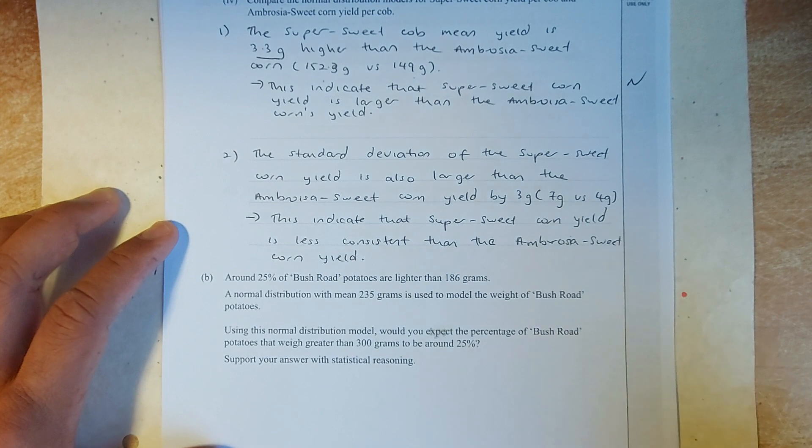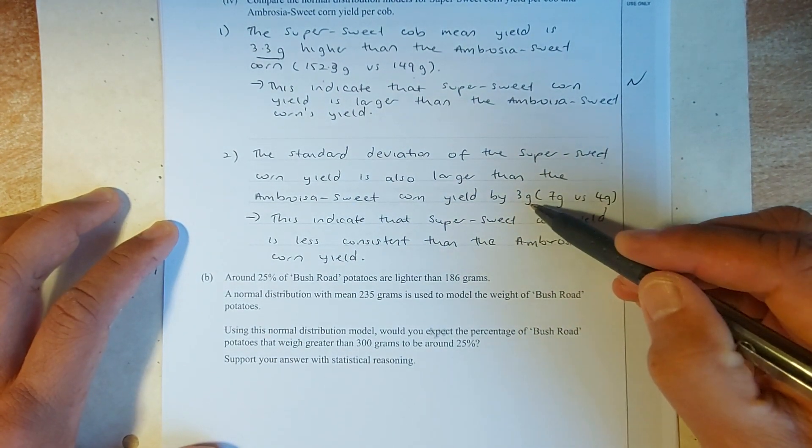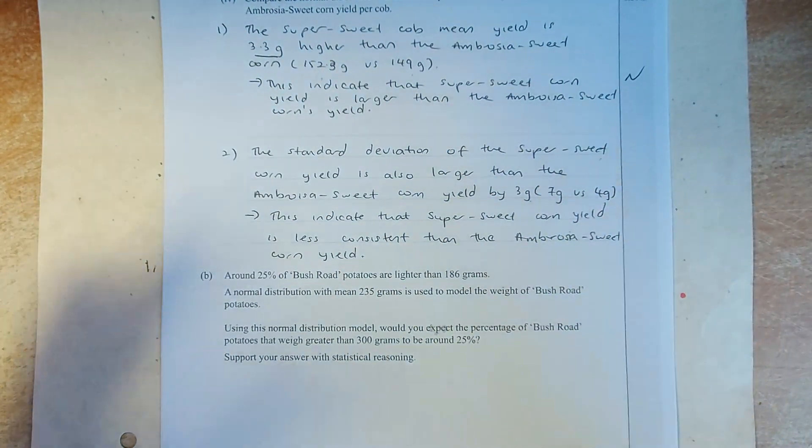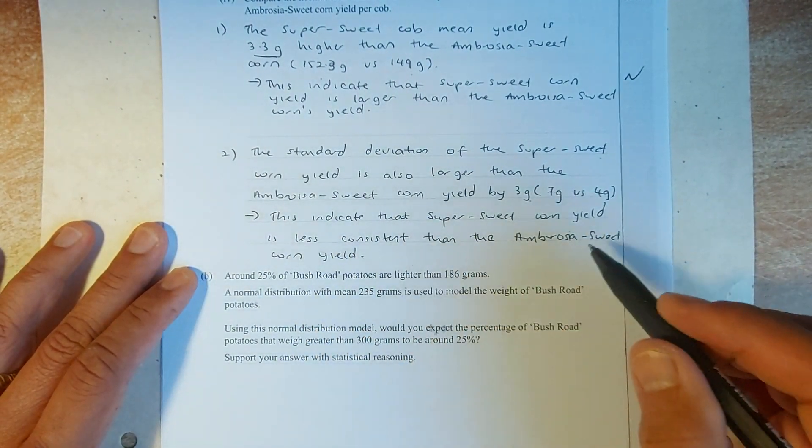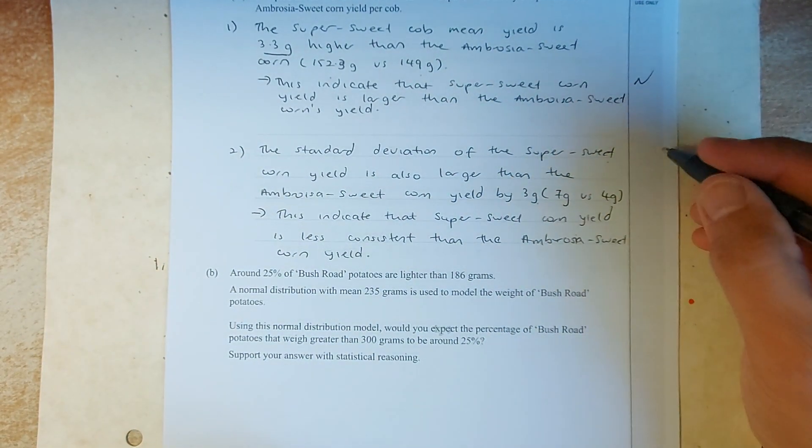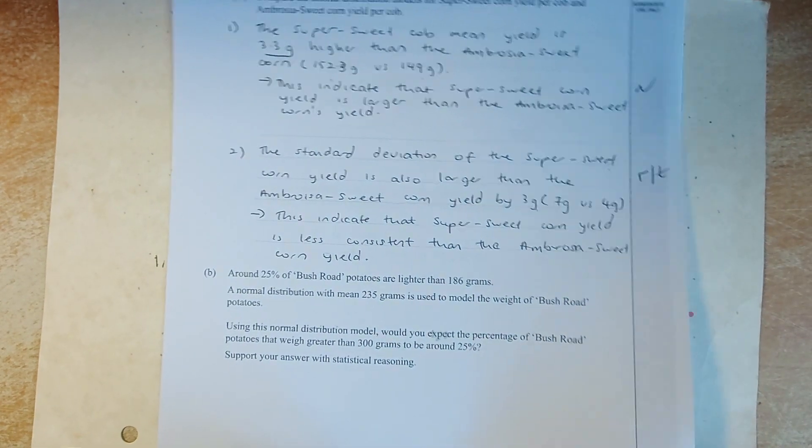And then we compare the standard deviation. The standard deviation was also the super sweet is larger. This time by 3 grams. Means that the super sweet has more variation than embryosal. Embryosal is more consistent. Therefore, the super sweet is less consistent than the embryosal. The embryosal are all the same size. The variation is less. So, that's why if you get both this right, you may get merit or excellence. Great.